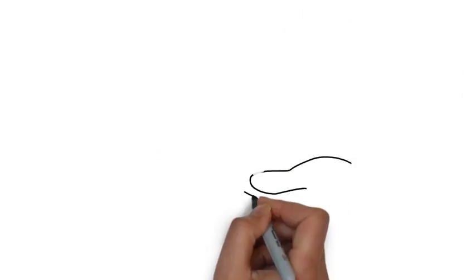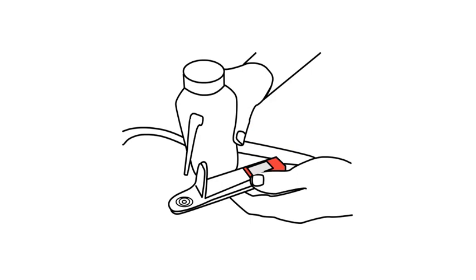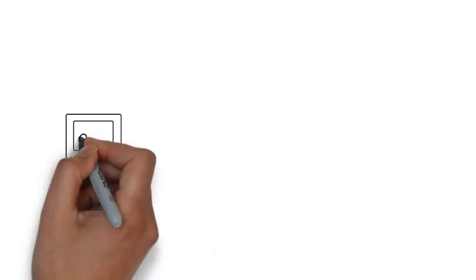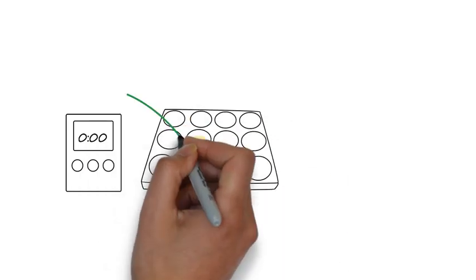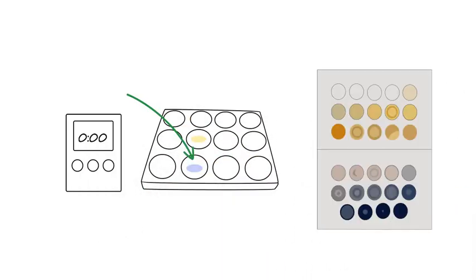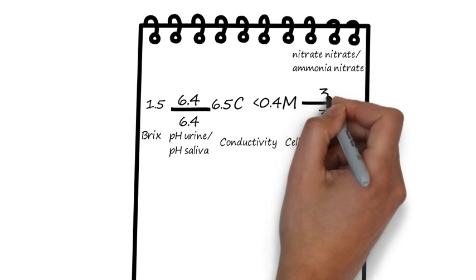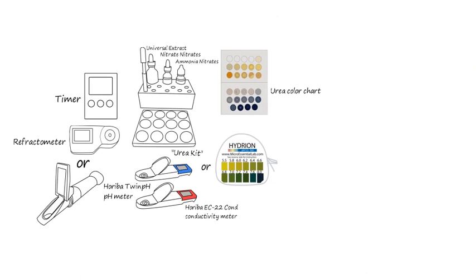Clean up your meters and area during the 5 minutes you are waiting to record your observation. When timer goes off, observe the blue color change and record the value according to the color chart provided in your testing kit. Rinse and clean up your vials and marble plate with distilled water and store your equipment for future use.